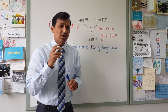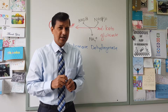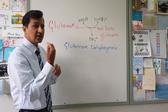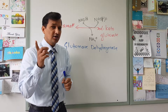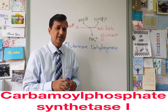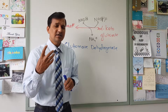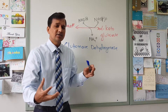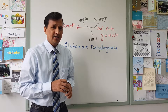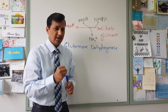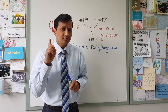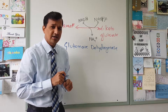The other two enzymes that can fix free ammonium ion are glutamine synthetase and carbamyl phosphate synthetase 1. Glutamine synthetase fixes ammonium ion to glutamate and converts it into glutamine. Carbamyl phosphate synthetase 1 is present in the mitochondrial matrix and is the very first enzyme in the urea cycle, where it fixes ammonium ion with bicarbonate to make carbamyl phosphate — it is one of the regulated enzymes in the urea cycle.